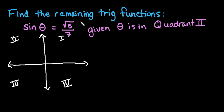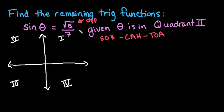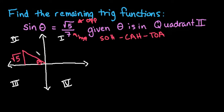We have the square root of 5 and 7. Remember SOH-CAH-TOA — sine is always opposite over hypotenuse. So we are given the opposite and the hypotenuse. When we set up our right triangle, the reference angle is always formed by the x-axis and the hypotenuse. The hypotenuse is the longest side, the opposite is the vertical side, and the adjacent would be along the bottom. The opposite side is the square root of 5, and the hypotenuse is 7.